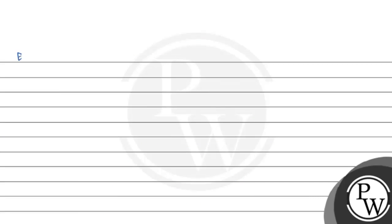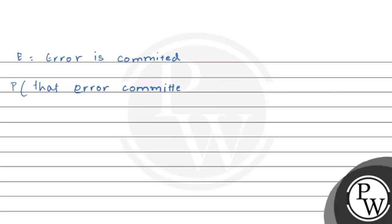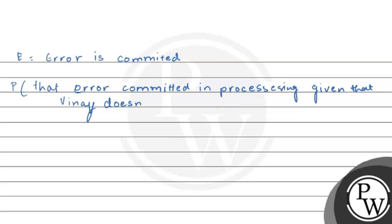We are also letting event E as error is committed. According to the question, we will find out the probability that the error is committed in processing, given that Vinay processed — that is, we want the probability that Vinay does not process the form.